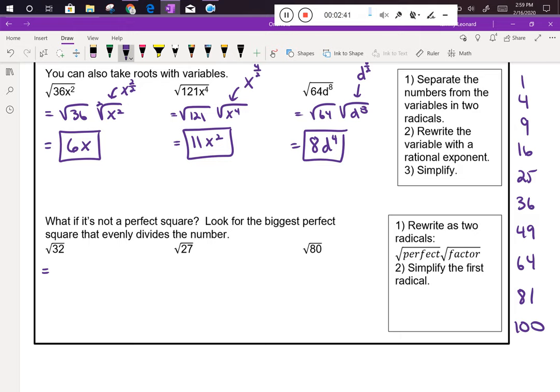I like to start at the bottom of my list and work my way up. 36 is bigger than 32, so I ask myself, does 25 go into 32? Nope. Does 16 go into 32? Absolutely. So I'm going to rewrite this as the square root of 16 times the square root of 2, because 16 times 2 is 32. Well, the square root of 16 is 4, and I don't know what the square root of 2 is, so that becomes my simplified answer.